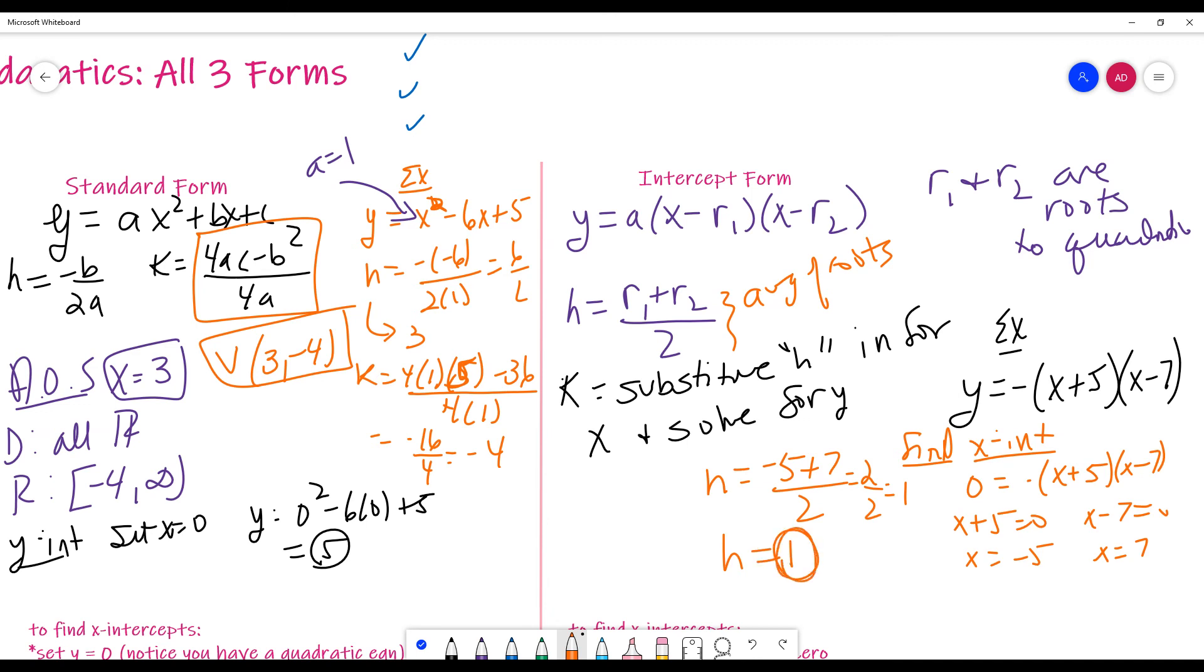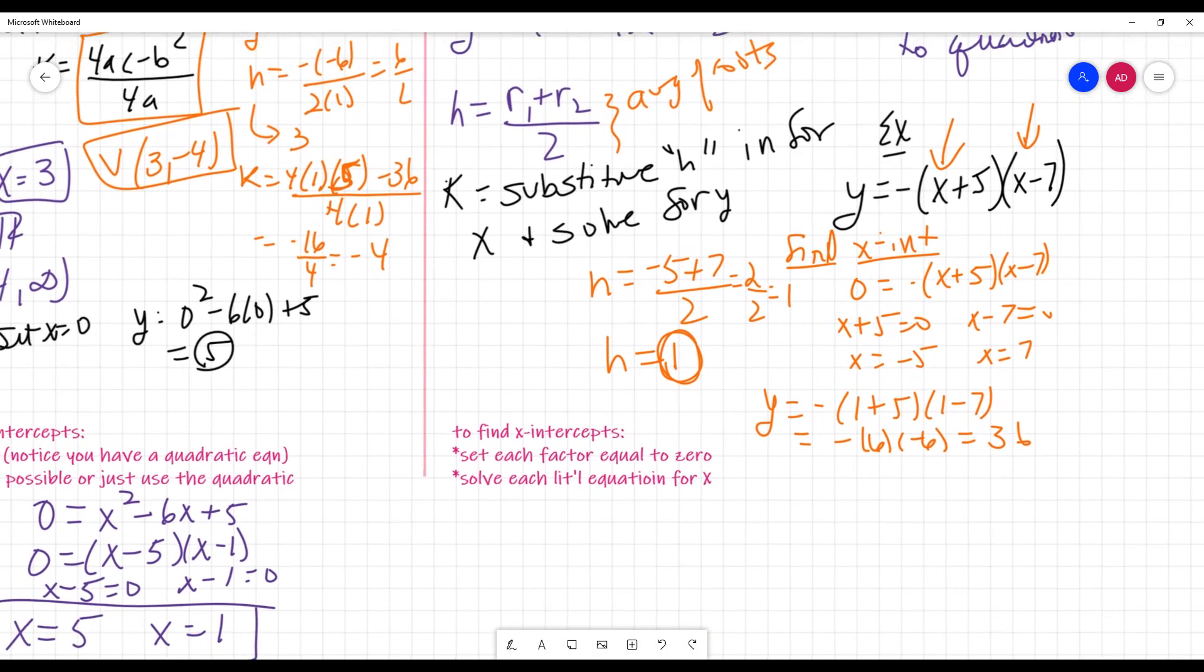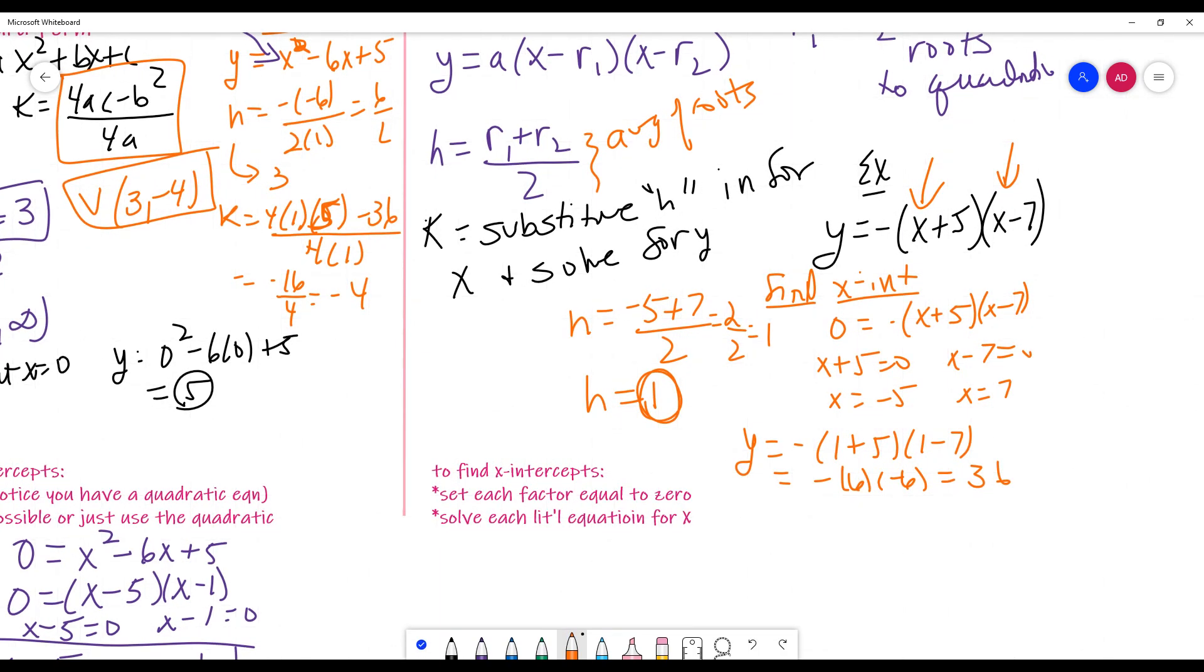Well, now, take the 1, plug it back in for my X, and then I get to solve for my K. So, Y is equal to negative 1 plus 5, 1 minus 7. Yep, you see it happening. So, I get negative 6 here. Excuse me, negative times 6 here, and then negative 6 there. So, I get 36. So, then your vertex ends up being, yeah, crazy, right? But my vertex ends up being, what color am I in, right? 1 comma 36. Okay, cool.